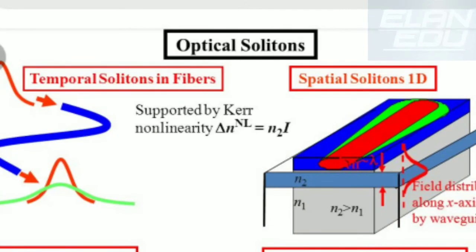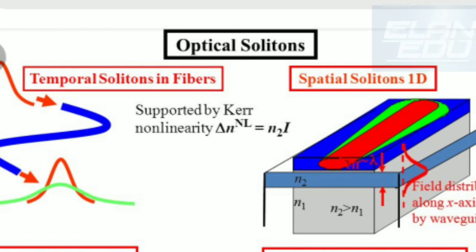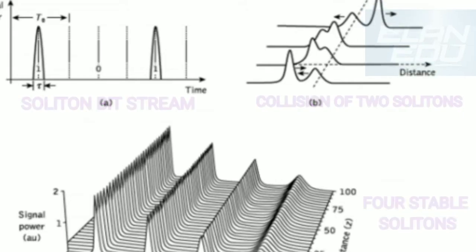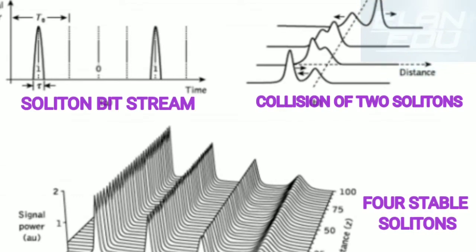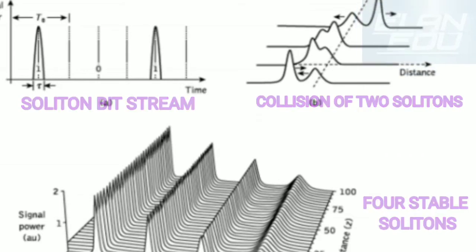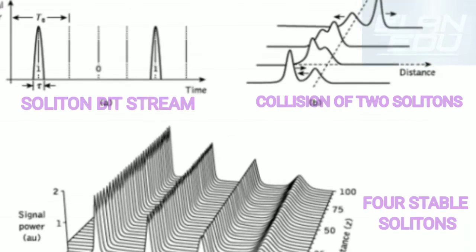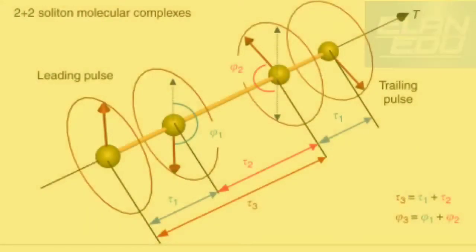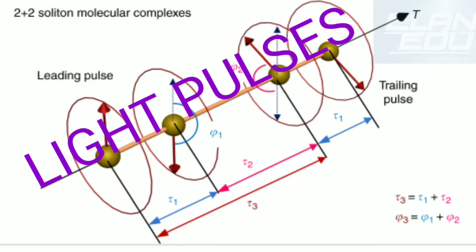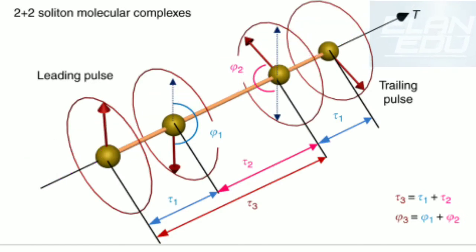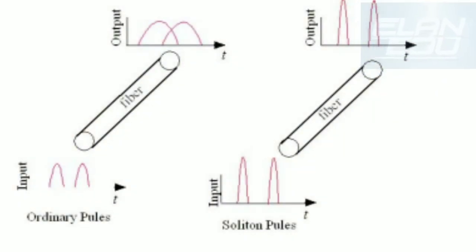Welcome to this session. Today we are going to see about optical solitons, which play a vital role in optical fiber communication. In optics, the term soliton is used to refer to any optical field that does not change during propagation, because of a delicate balance between nonlinear and linear effects in the medium — that medium being the optical fiber cable, a glass tube through which data is transmitted by means of light pulses.